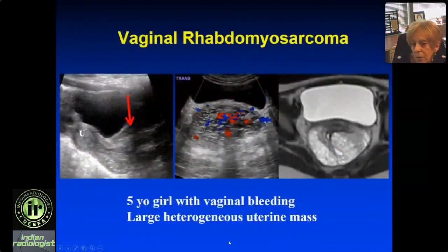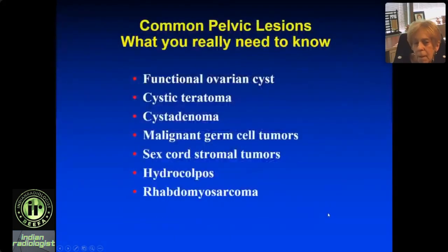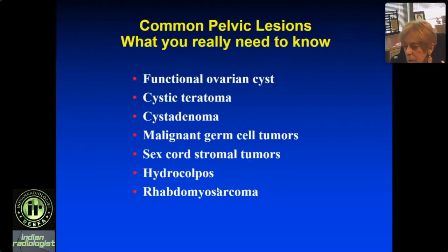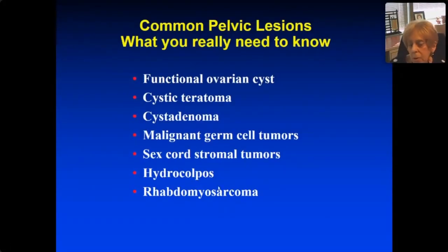A 5-year-old girl with vaginal bleeding: here's the uterus, probably with blood product in it, and the vagina is very vascular. The MR shows a large heterogeneous mass — that's rhabdomyosarcoma. To summarize common pelvic lesions: functional ovarian cysts are really common. Cystic tumors are teratoma and cystadenoma. Malignant tumors are solid — usually germ cell tumors in adolescents, and sex cord stromal tumors in prepubertal girls. In the vagina and cervix, the benign lesion is hydrocolpos and if it's malignant it's rhabdomyosarcoma.